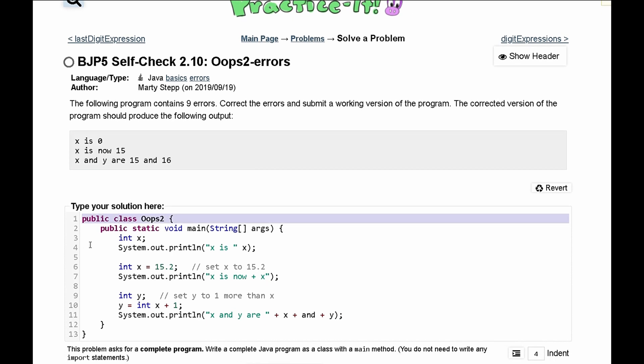First, we have our class on line one, that looks good, class declaration. Second, we are declaring our main method, that looks good.